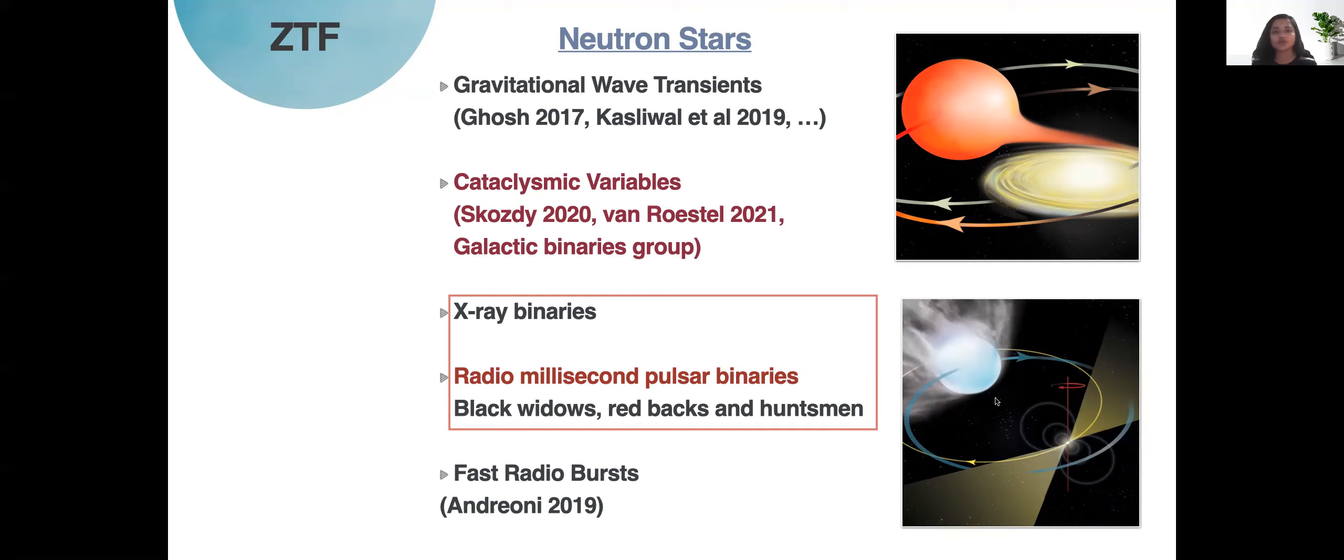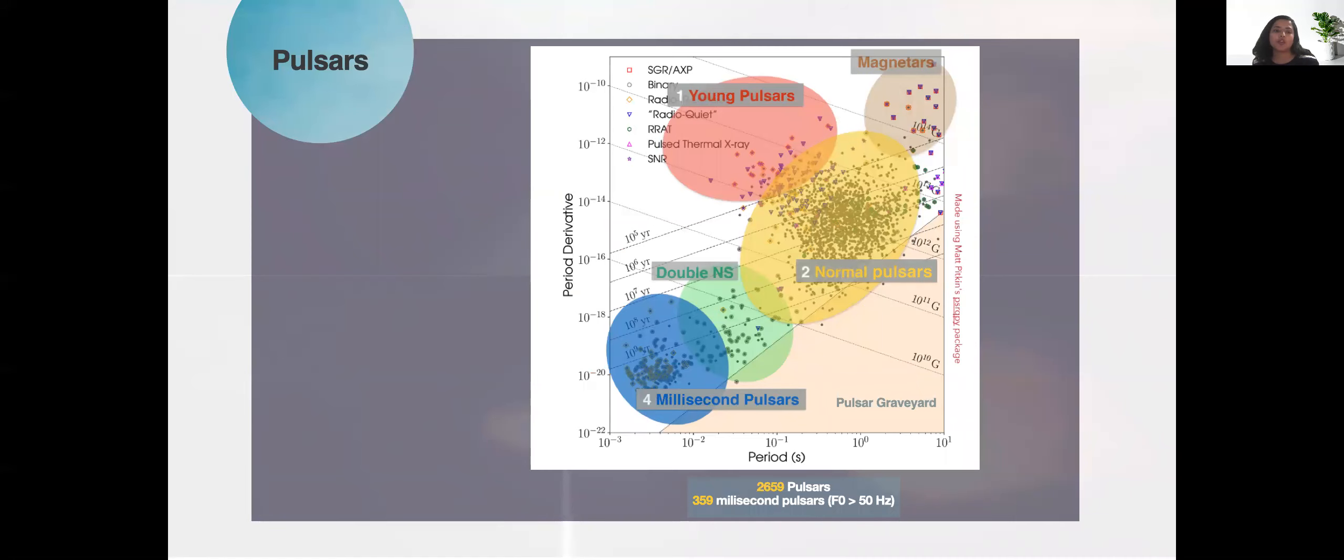There are different types of radio millisecond pulsars and we have named them based on cannibalistic spiders called black widows, redbacks and huntsmen because the winds from pulsar are slowly eating away the companion. If you look at the pulsar population, today we know of about 2659 pulsars and if we take a conservative criteria that any pulsar that rotates faster than 50 times in a second is a rapidly rotating millisecond pulsar, we currently are looking at a population of about 359 millisecond pulsars.